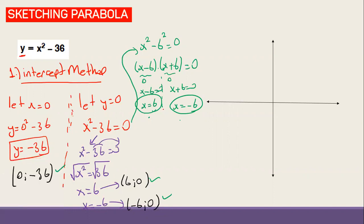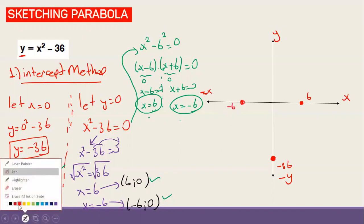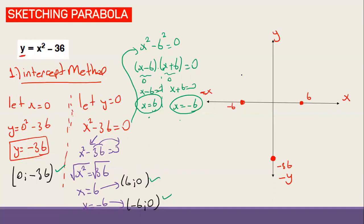Now I place the points on the coordinate system. This is the x-axis, this is the y-axis. The point (0, -36) is about here, the point (6, 0) is about here on the positive x side, and (-6, 0) is about here on the negative x side. Then we join them by a curve, which looks something like this.